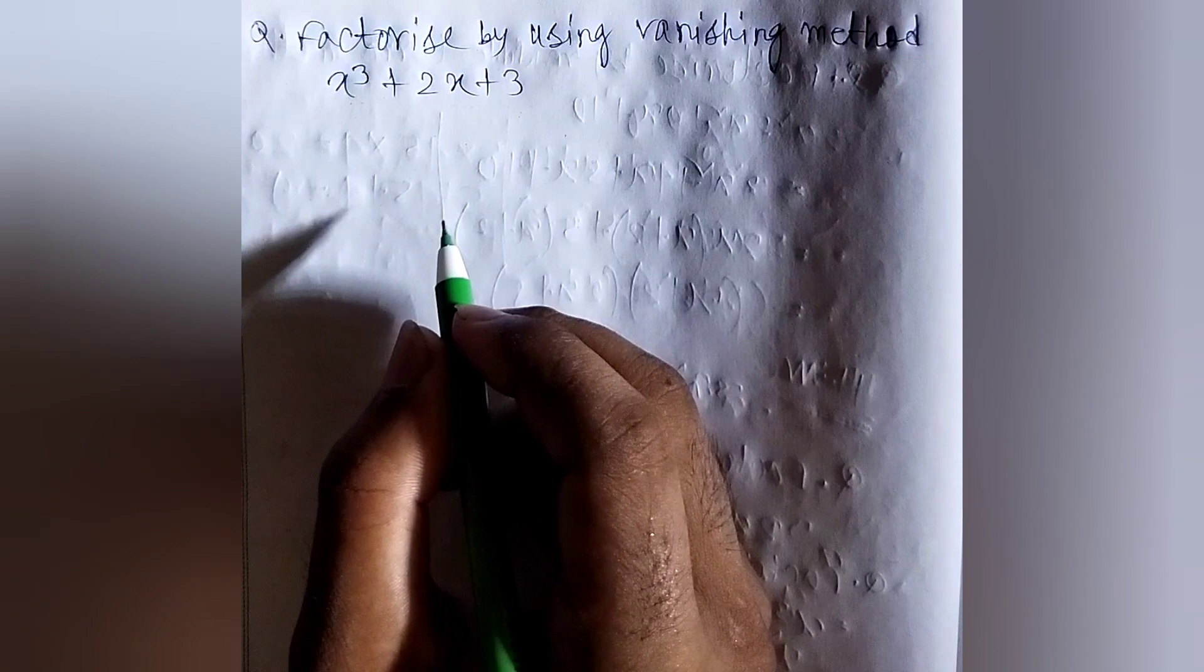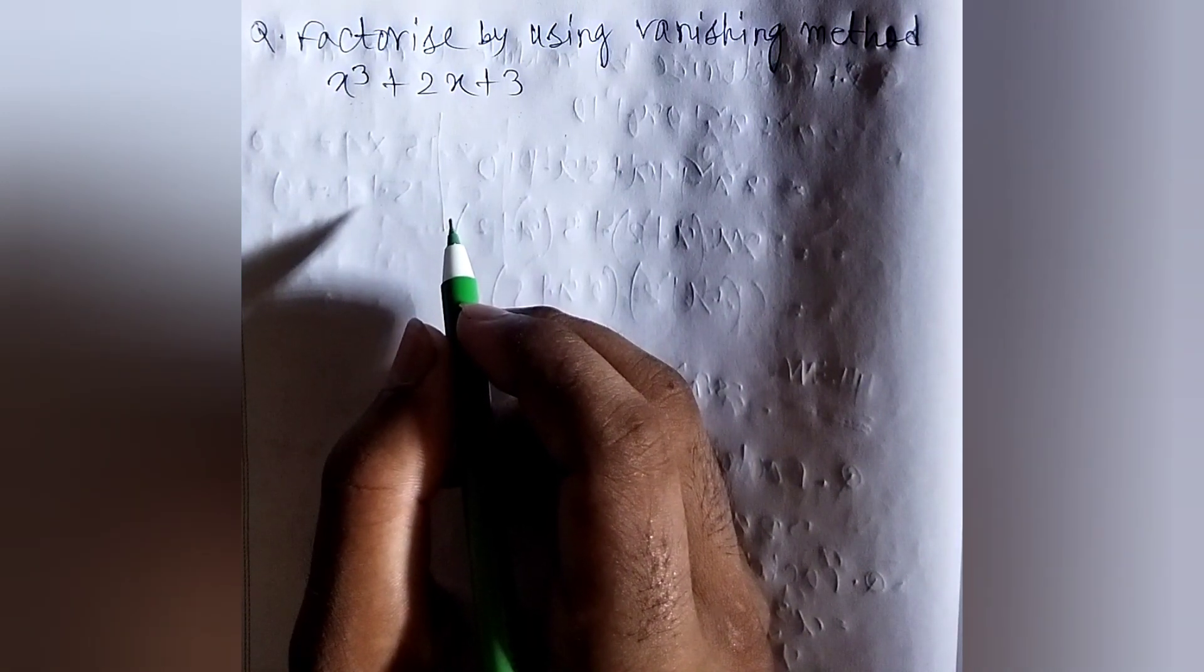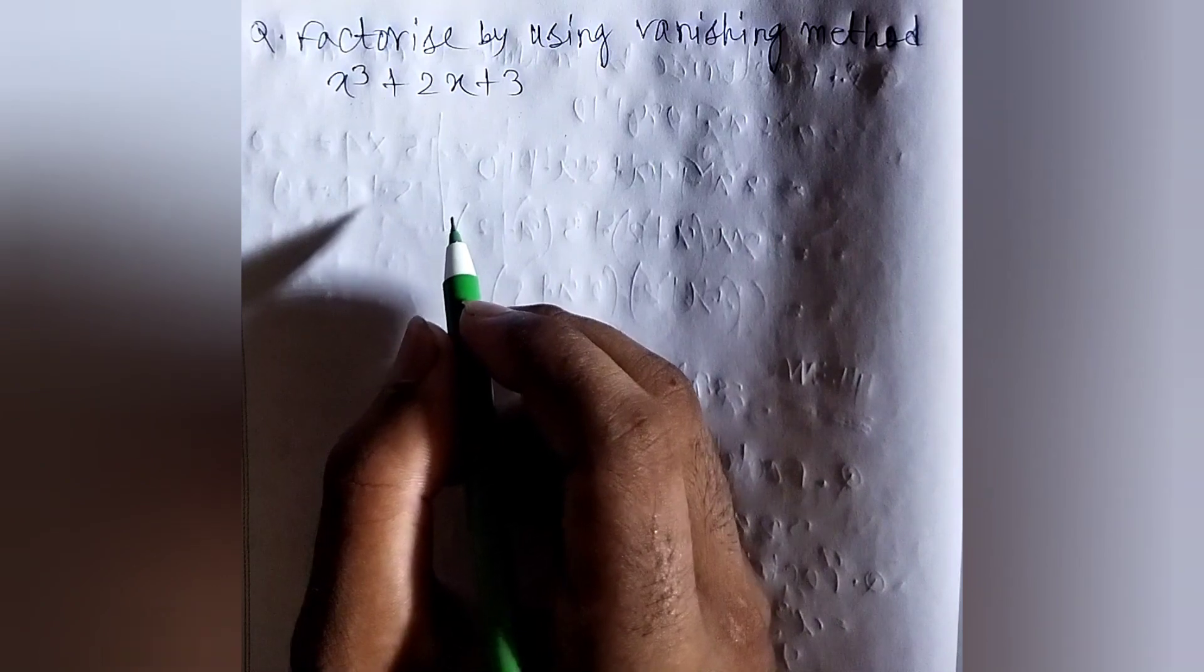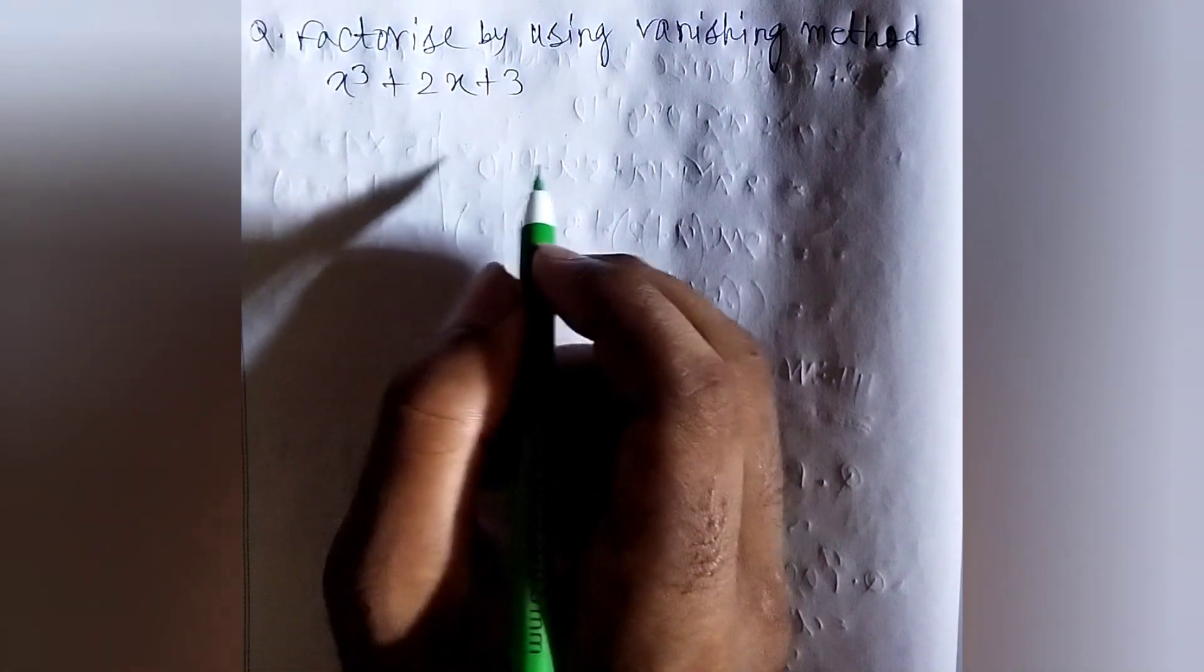In our last video, we discussed a method of factorization called the middle term method. Today, we are going to learn about a new method of factorization called the vanishing method.